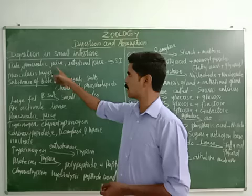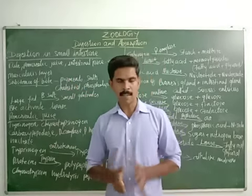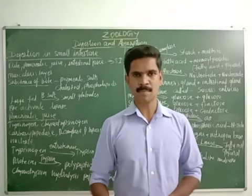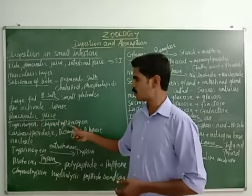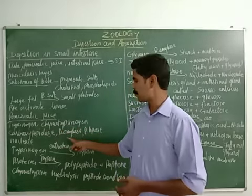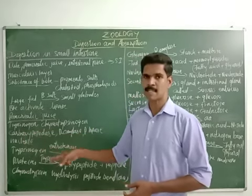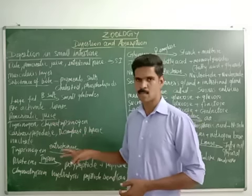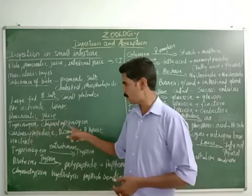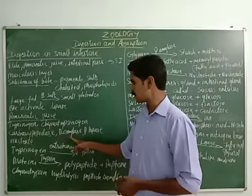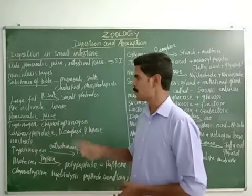Next, we are going to study about the second substance — pancreatic juice. Like bile, the pancreatic juice also consists of many substances and many enzymes. For example: trypsinogen, chymotrypsinogen, carboxypeptidase, pancreatic amylase, pancreatic lipase, and nuclease. These are some of the very important enzymes present in the pancreatic juice.